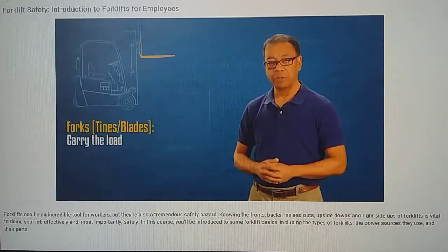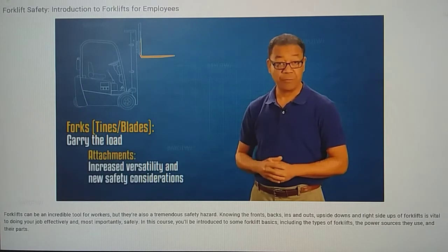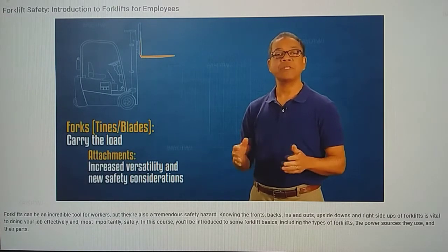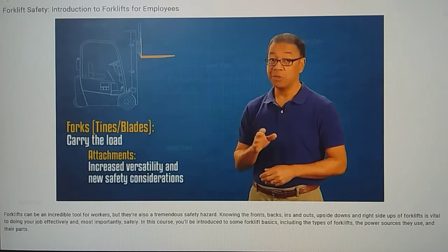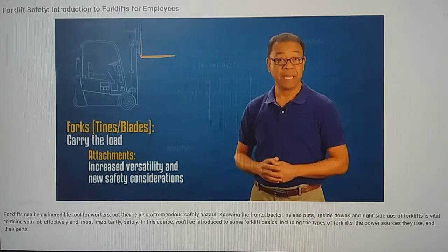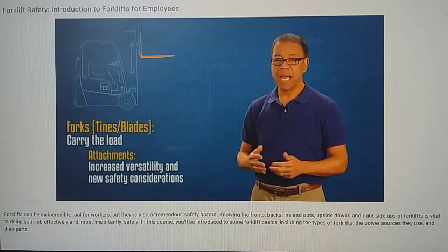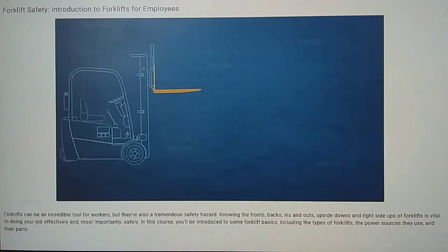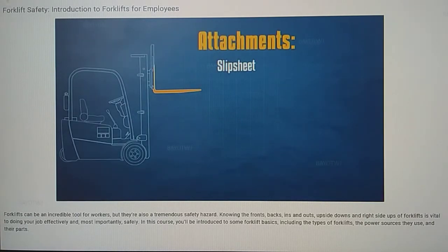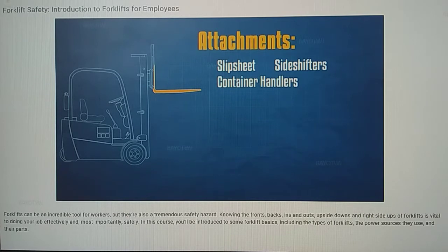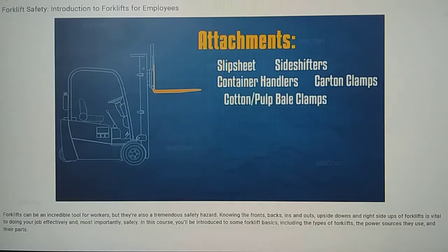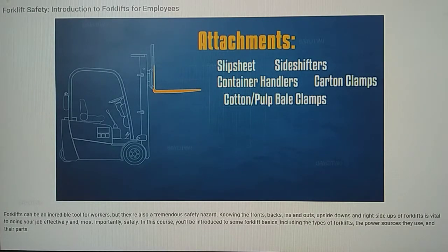Some powered industrial trucks use attachments instead of traditional forks. Attachments increase versatility but introduce new safety considerations, such as stability, capacity, and visibility. Some common attachments include slip sheet attachments, which let the operator forego the use of pallets. Side shifters, which shift the forks right and left. Container handlers for lifting shipping containers. Carton clamps, which have a pressure valve to squeeze the load. Cotton or pulp bale clamps that grab and hold bales.